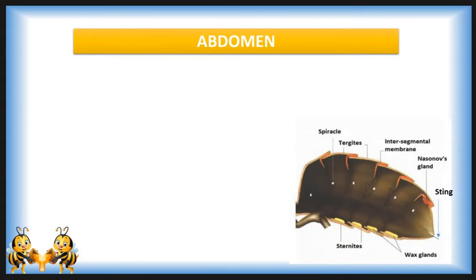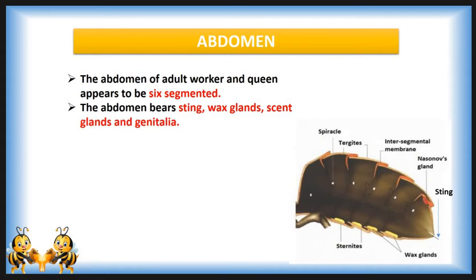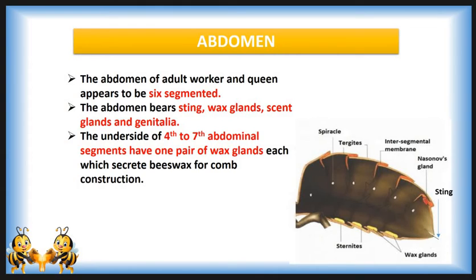The abdomen of the adult worker and queen appears to have six segments; segments 8 to 10 are reduced in size, and the first abdominal segment is united with the metathorax. The abdomen bears a sting, wax gland, scent gland, and genitalia. The underside of the 4th to 7th abdominal segments has one pair of wax glands, each secreting beeswax for comb construction. In the worker, the egg-laying apparatus or ovipositor is modified into a sting; the queen uses the ovipositor for egg-laying and for stinging competing queens.